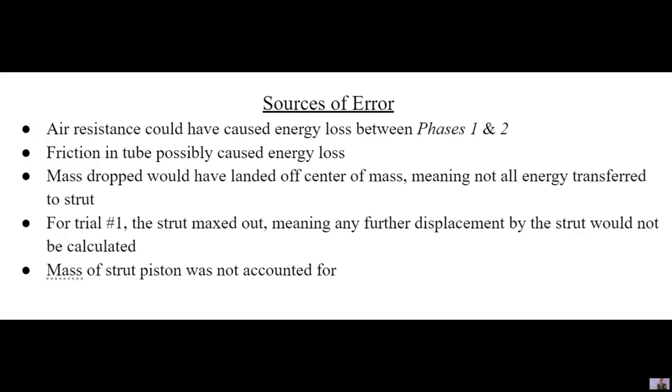Here are our sources of error. Even though we consider air resistance to be negligible during our calculations, air resistance is still a factor that could have caused some misalignment. When dropping the masses onto the strut, we use the tube, and friction from that tube could have caused energy loss due to friction and heat. It's also possible that the mass didn't land on the strut on its center of mass, meaning all the energy didn't get transferred over to the strut. For trial one, the strut maxed out, meaning the strut traveled the maximum distance it could.